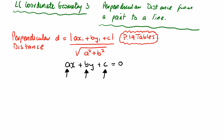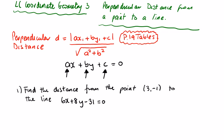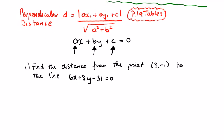Let's look at one easy question first, then I'll get you to test yourselves with one, and then we'll look at how difficult these questions can get. The first question: find the distance — and when they say the distance, they mean the shortest distance, which is the perpendicular distance — from the point (3, −1) to the line 6x plus 8y minus 31 equals 0.